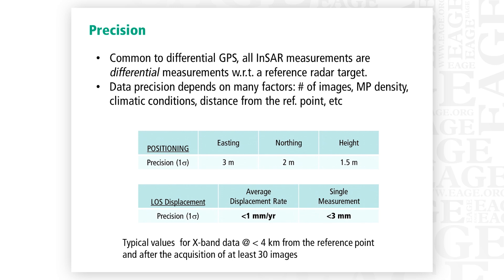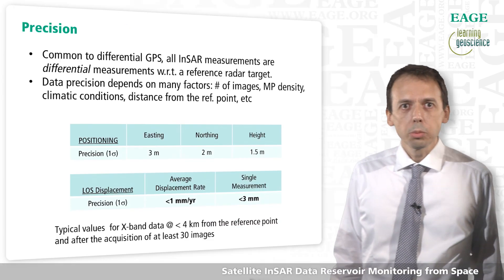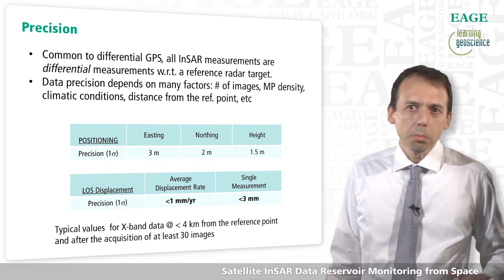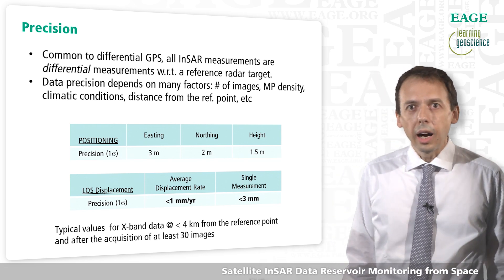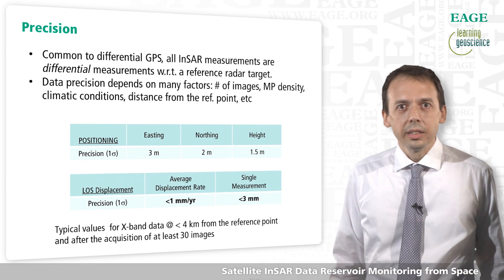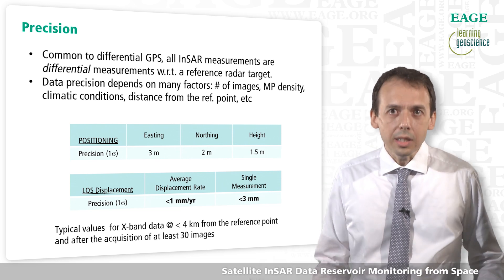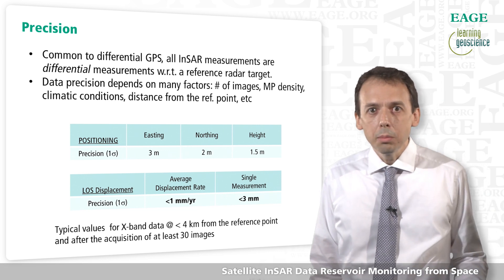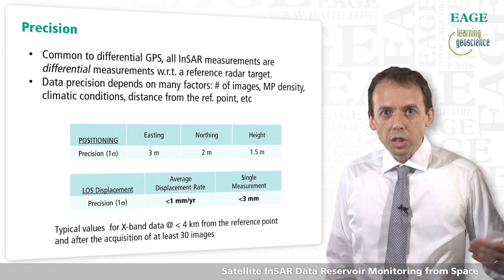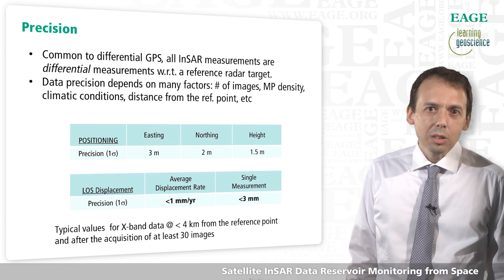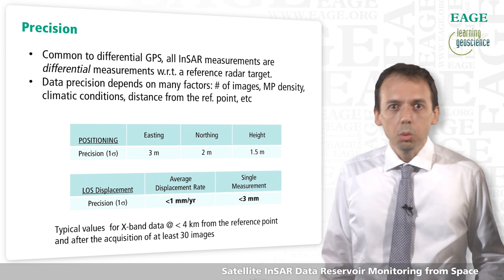What about precision? Like differential GPS and other geodetic techniques, all InSAR measurements are differential measurements with respect to a reference radar target. Data precision depends on many factors, but the most important are the number of images, the density of measurement points, the climatic conditions at the time of acquisition, and the distance from the reference point. Typically, you get a precision better than 1 mm per year in average displacement rate estimation, and better than 3 mm over each single measurement, at least using the new X-band data.